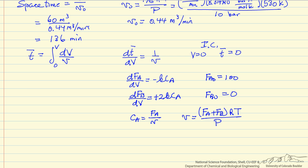What we can do is take these equations and put them into, in this case, a Polymath program. The values for the pressure and the temperature, the gas constant, and integrate from the initial volume of zero to the total cumulative volume of 60 cubic meters.